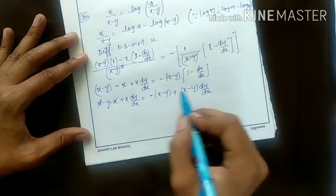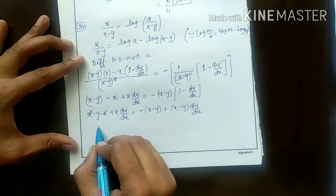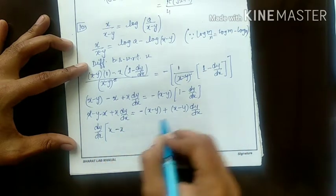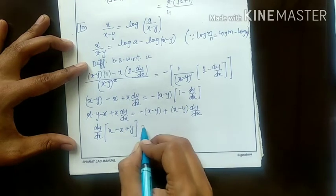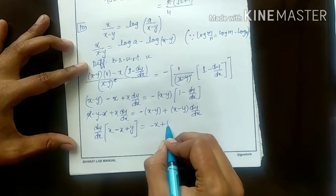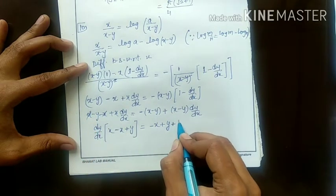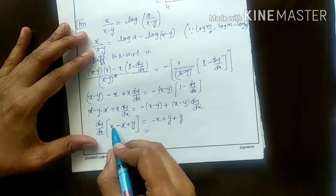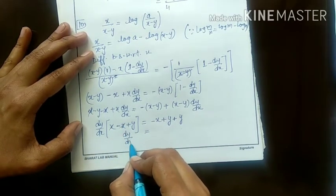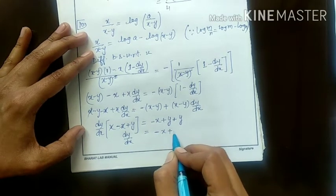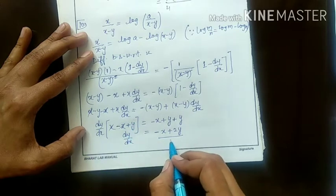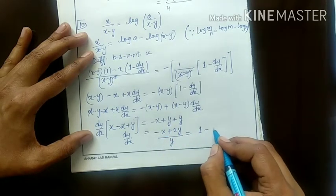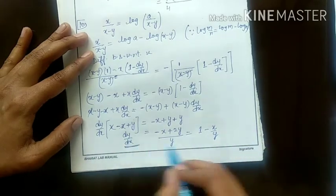Two powers cancel, cross multiply. This is x minus y minus x plus x into dy by dx is equal to x minus y minus x plus x dy by dx, equals minus of x minus y into dy by dx. Here you see terms cancel, and we bring dy by dx terms to one side. Taking dy by dx common: x minus (sign changes) minus y plus x — x's cancel. So dy by dx equals minus x plus 2y upon y, which gives 2y upon y plus minus x upon y, so dy by dx is proved.